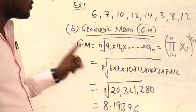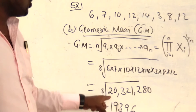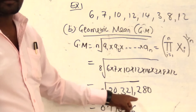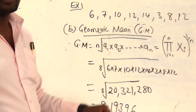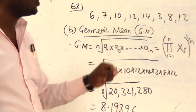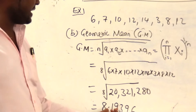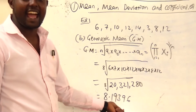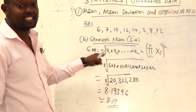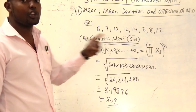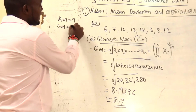So what you need to do is get the product of the data: 6 times 7 times 10 times 12 times 14 times 3 times 8 times 12, giving 20,321,280. Then get the 8th root, and you get approximately 8.19. That is the geometric mean. Remember, when we calculated arithmetic mean we got 9, and now geometric mean is 8.19. We can now proceed to how we get the harmonic mean.